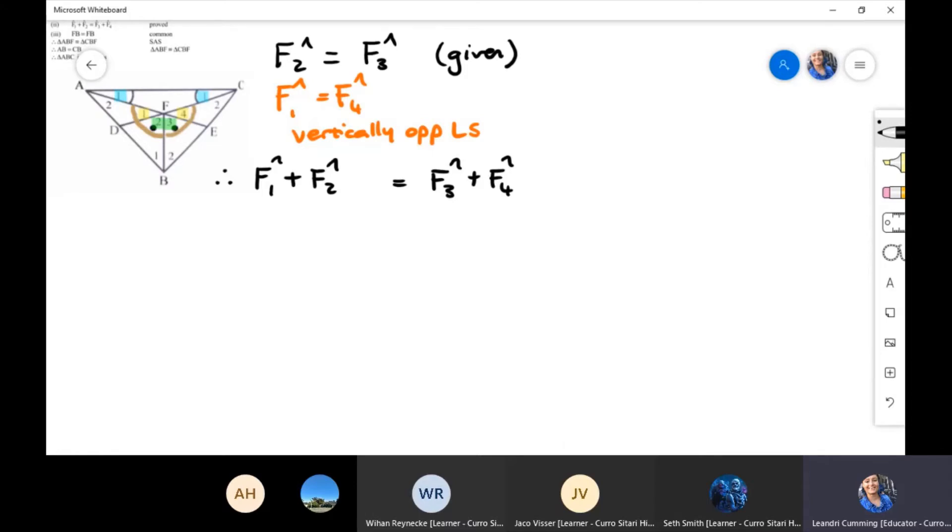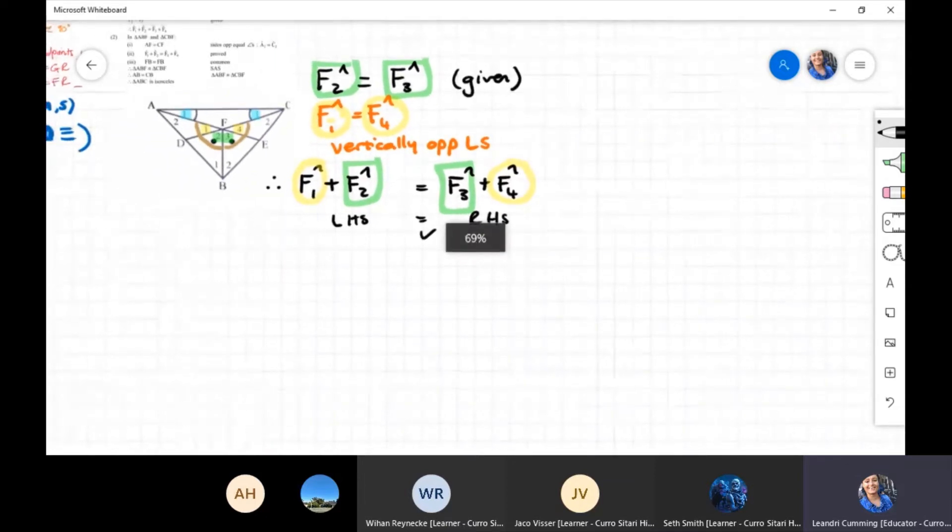Therefore, if angle F1 plus angle F2 is equal to angle F3 plus angle F4, it is because we've already got our given information that angle F2 is equal to angle F3. So from that, we can see if angle F1 equals angle F4 and angle F2 equals angle F3, then it means my left-hand side is in fact equal to my right-hand side. Vertically opposite angles there.